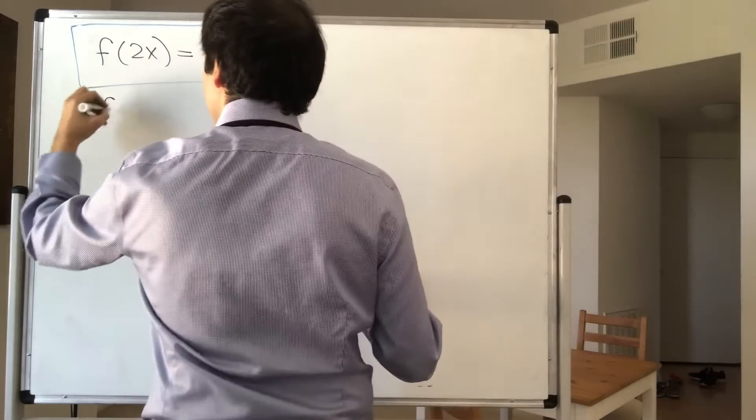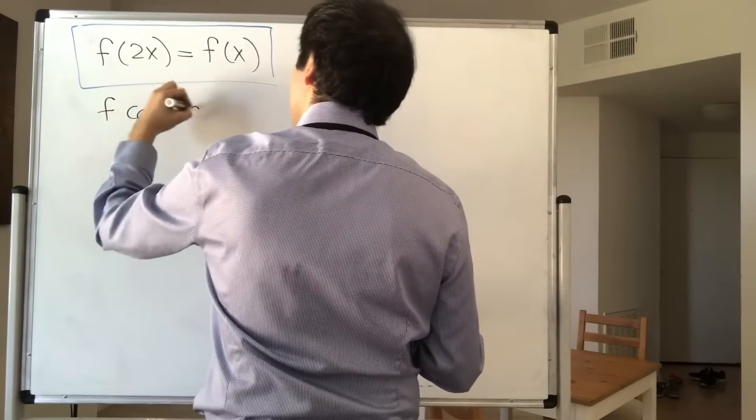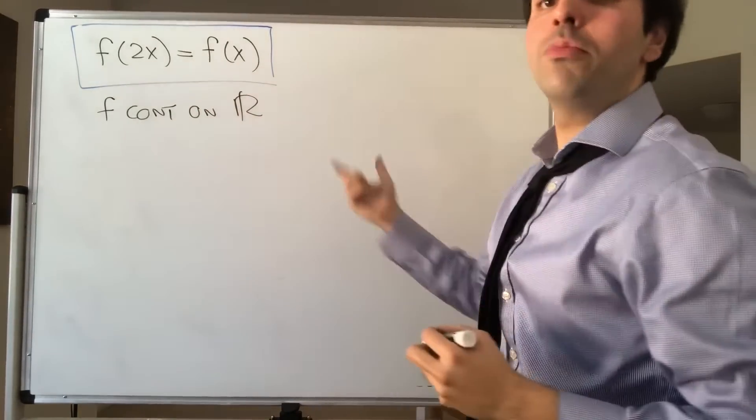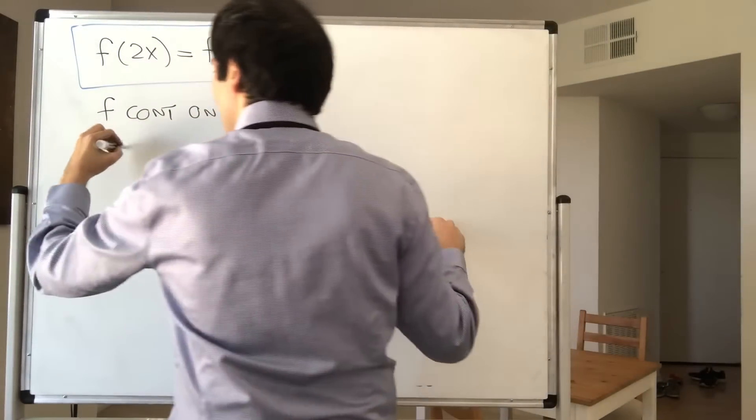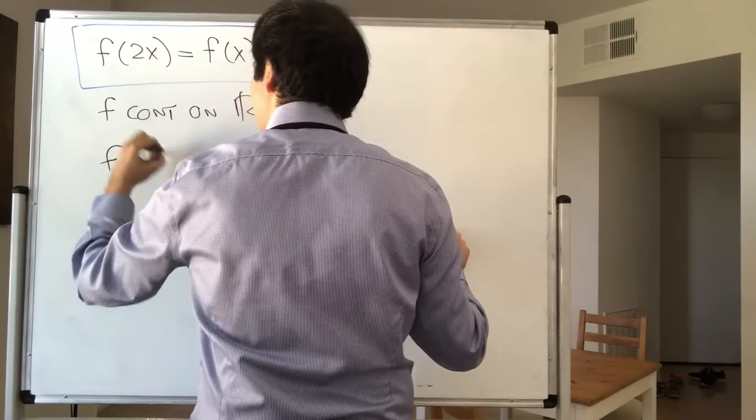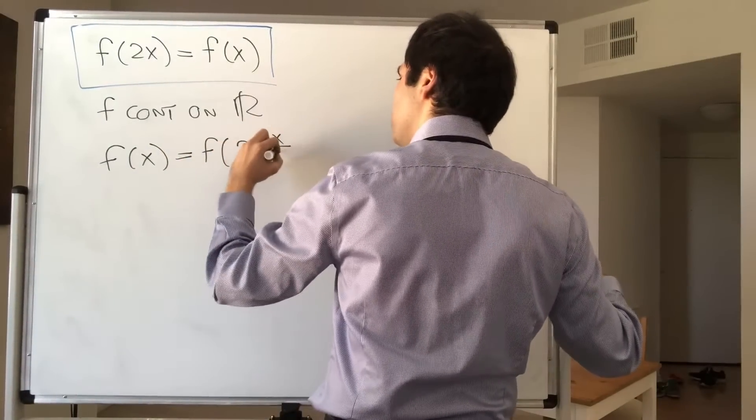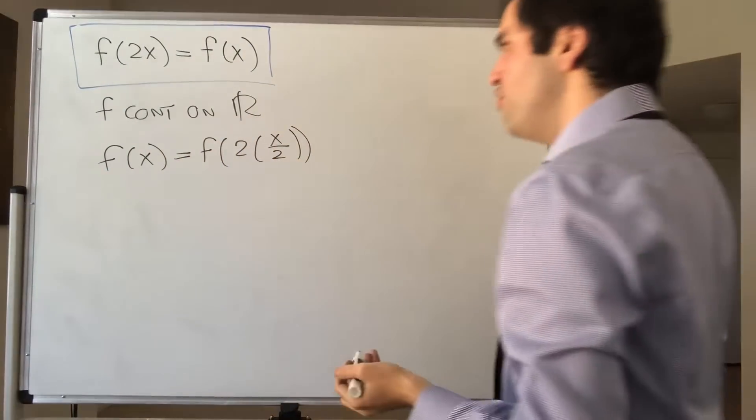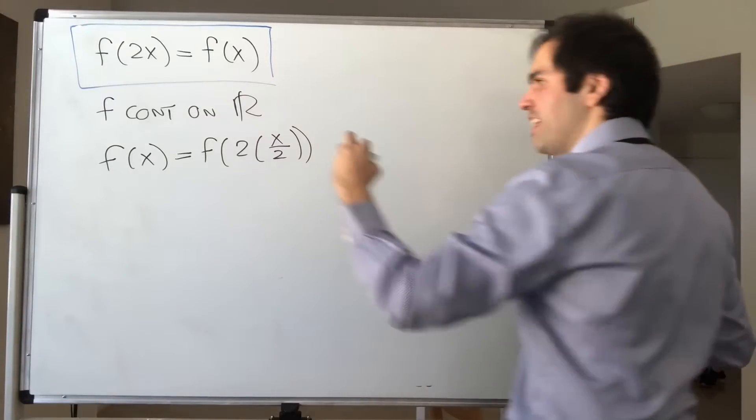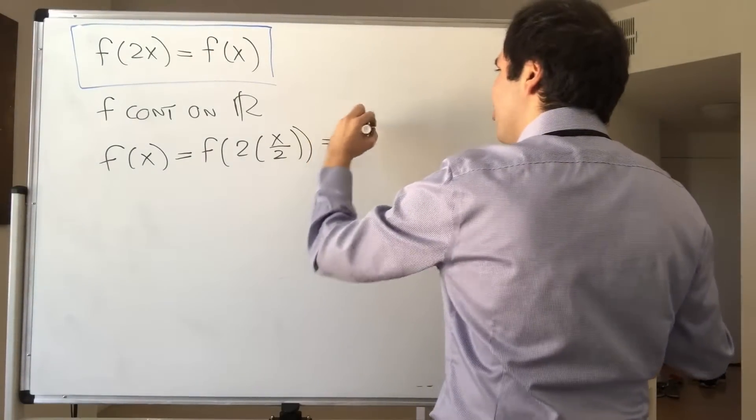So suppose f is continuous on R. And here's the main observation. If f of x equals f of 2x, then f of x, well, that's f of 2 times x over 2. But f of 2 times anything is f of that thing, so that becomes f of x over 2.